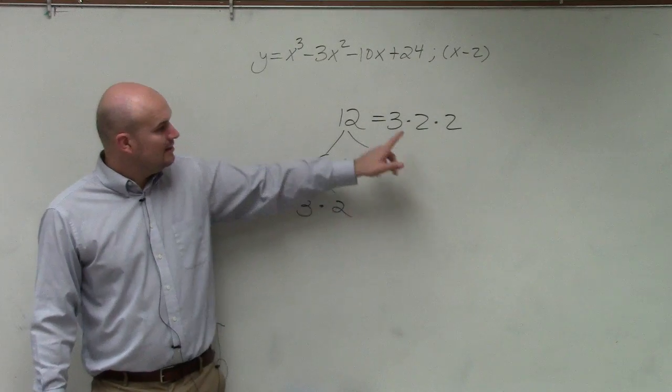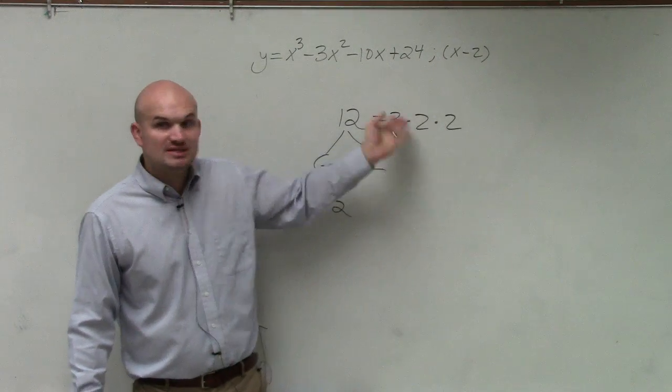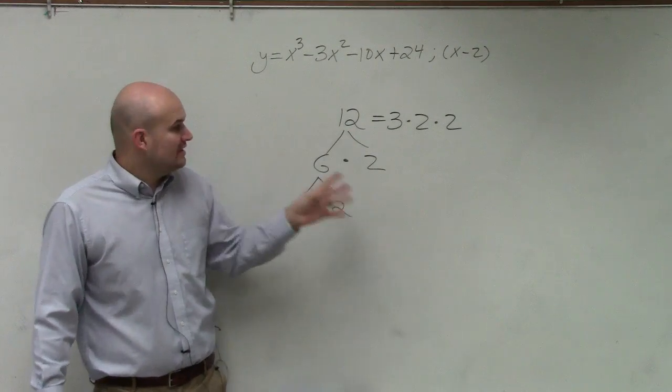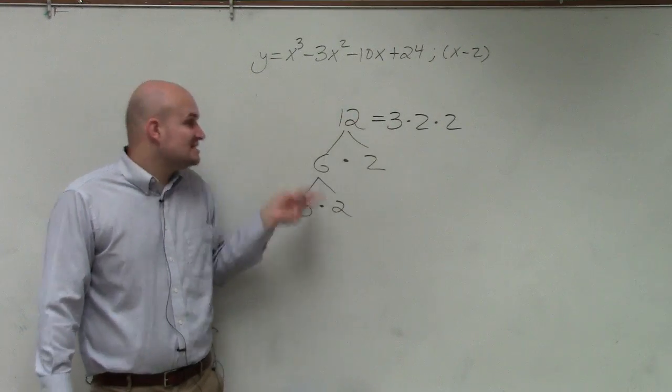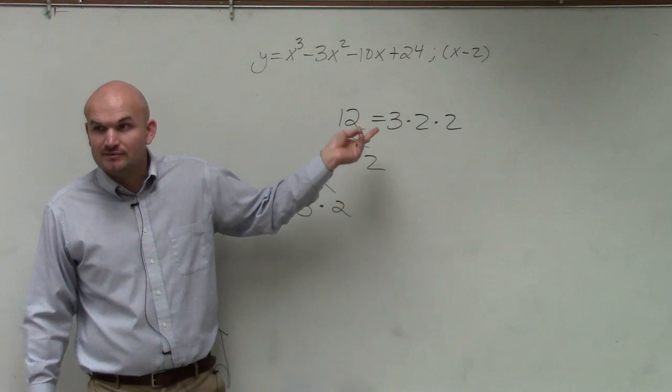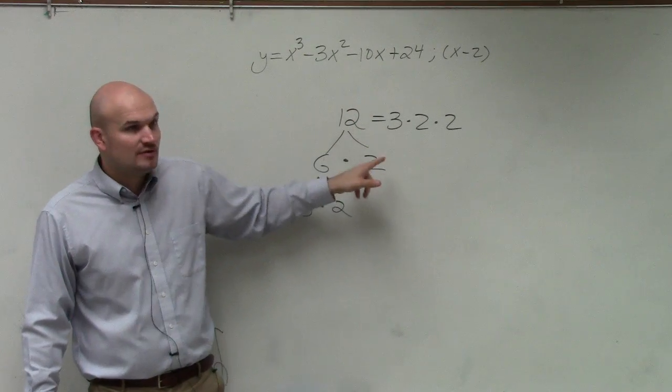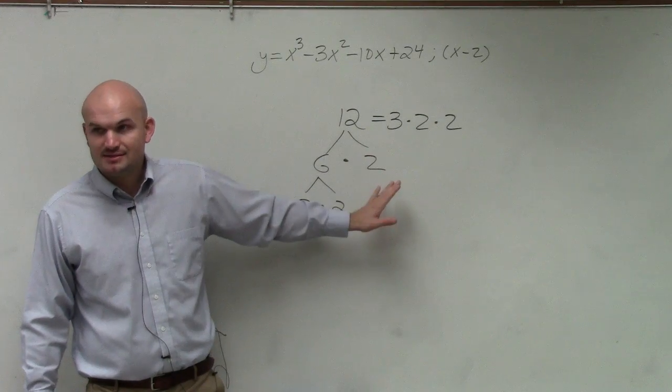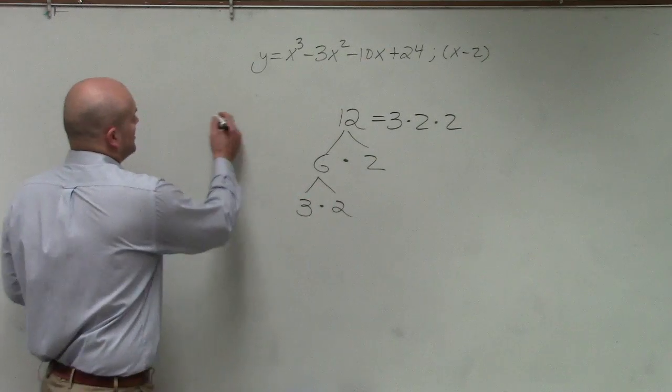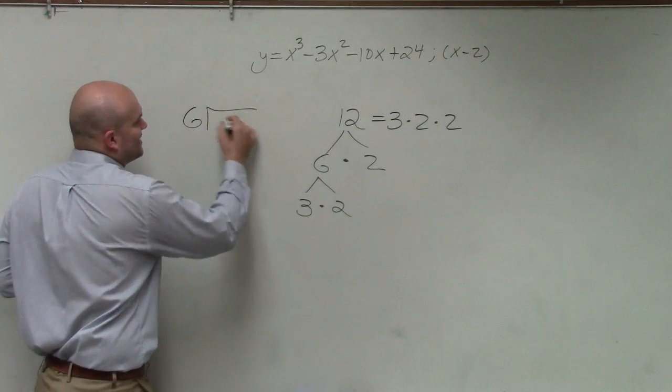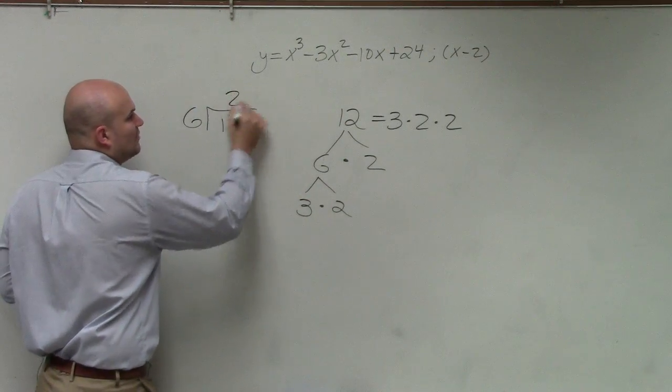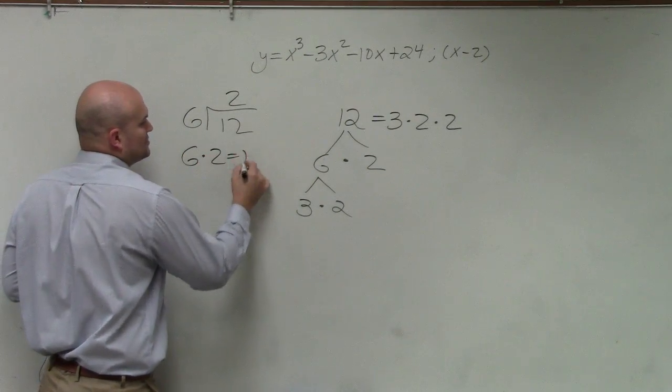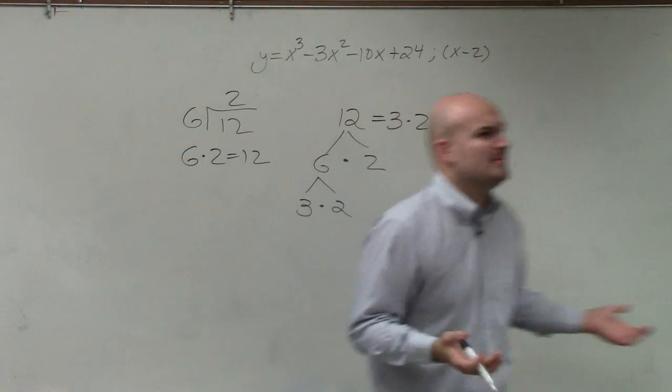So do you guys agree here that 3 times 2 times 2 is the equivalent of 12? Yes? Do you also agree that 6 is a factor of 12? Because 6 evenly divides into 12, right? It evenly divides into 12 two times. Does that make sense? Yes? No.